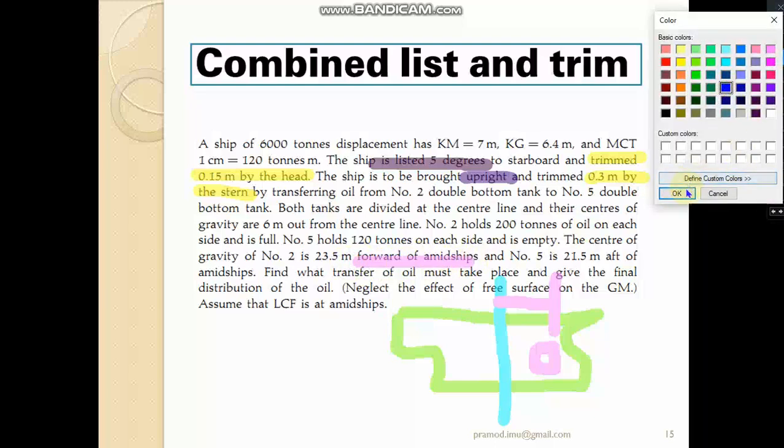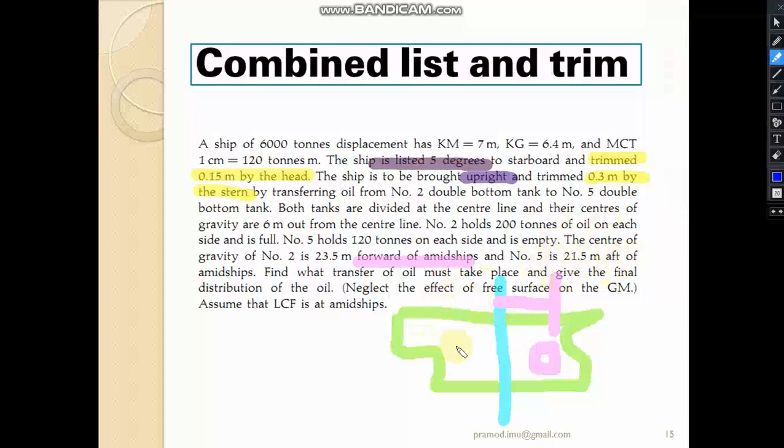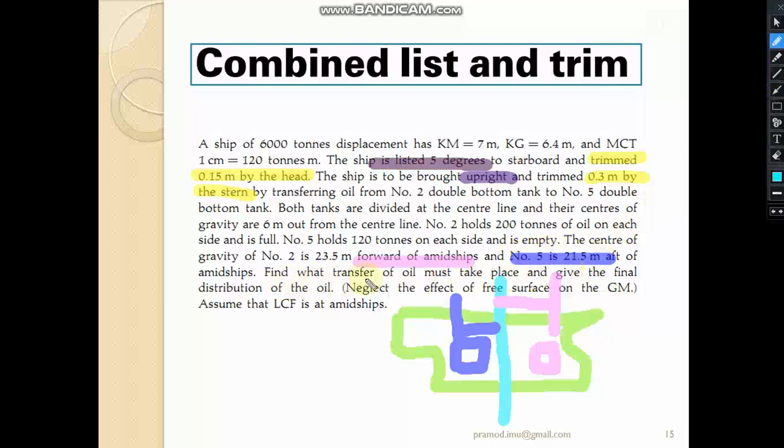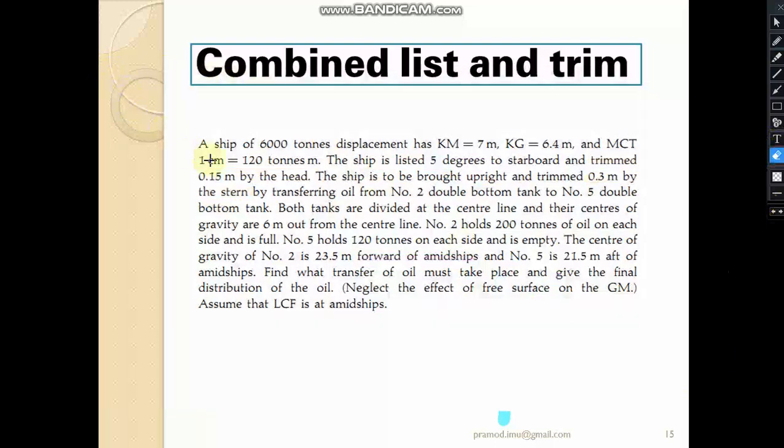Number 5 tank is somewhere here, 21.5 meters after midship. This distance is 21.5 meters after midship. Just for representation I am drawing this figure. Actually, the tank location may not be at this exact position, but just to give you an idea. Now you have got an idea of how the tank locations are in the longitudinal direction. The question is how much oil must I transfer so that I can achieve this desired list as well as trim?